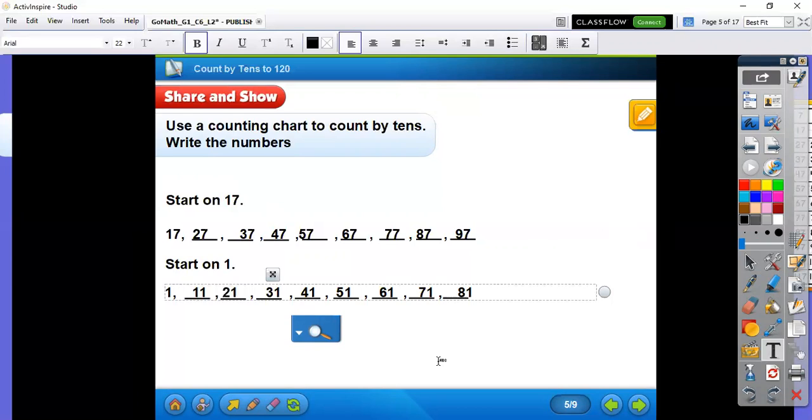This one may seem a little tricky because you're thinking, well, why do we have 1, 1? Well, technically on 1, our tens is 0. So it went from 0 up to 1 ten, and then 2 tens, and then 3 tens. So don't get tricked by that.